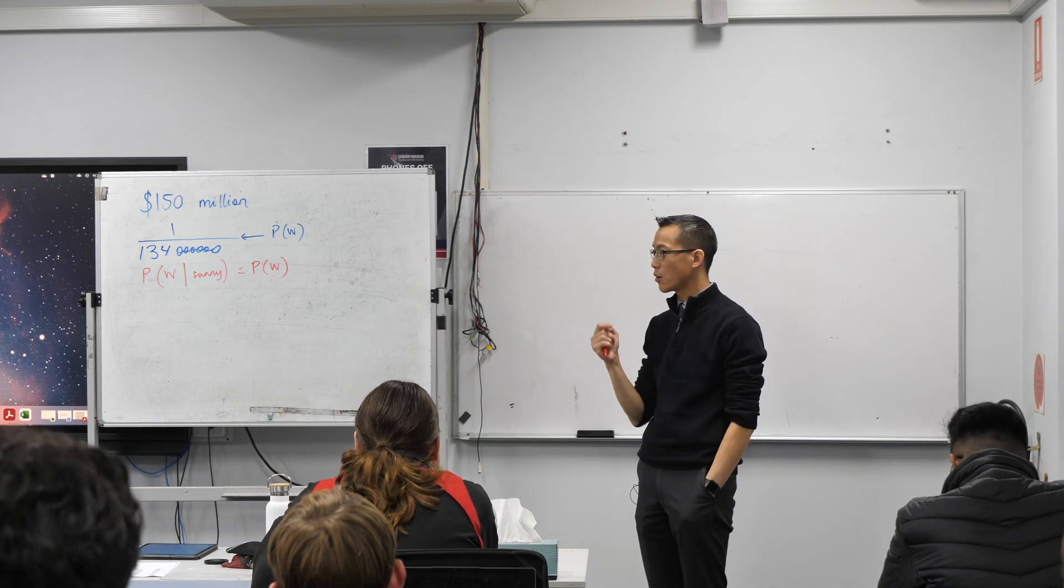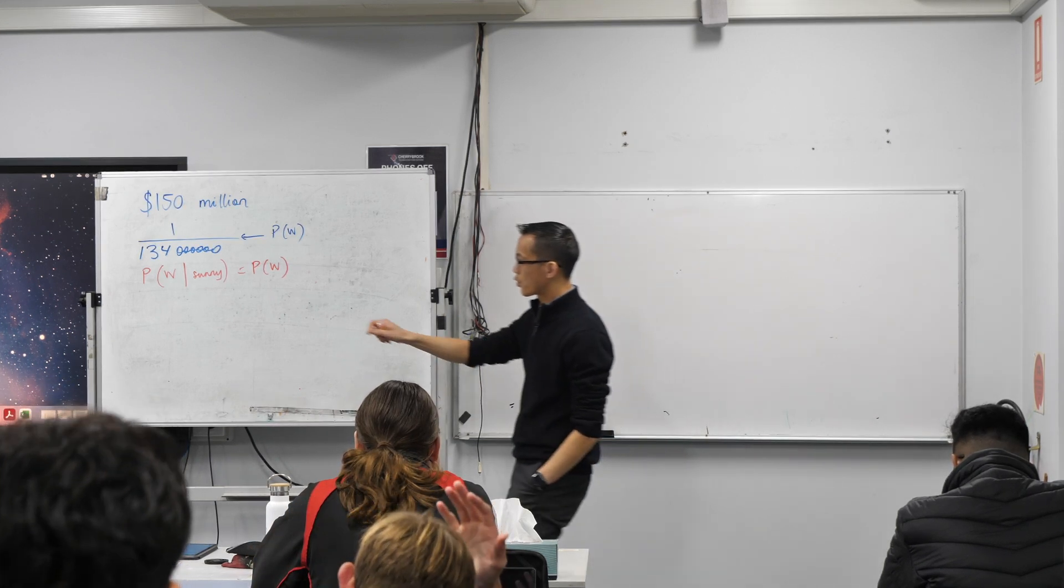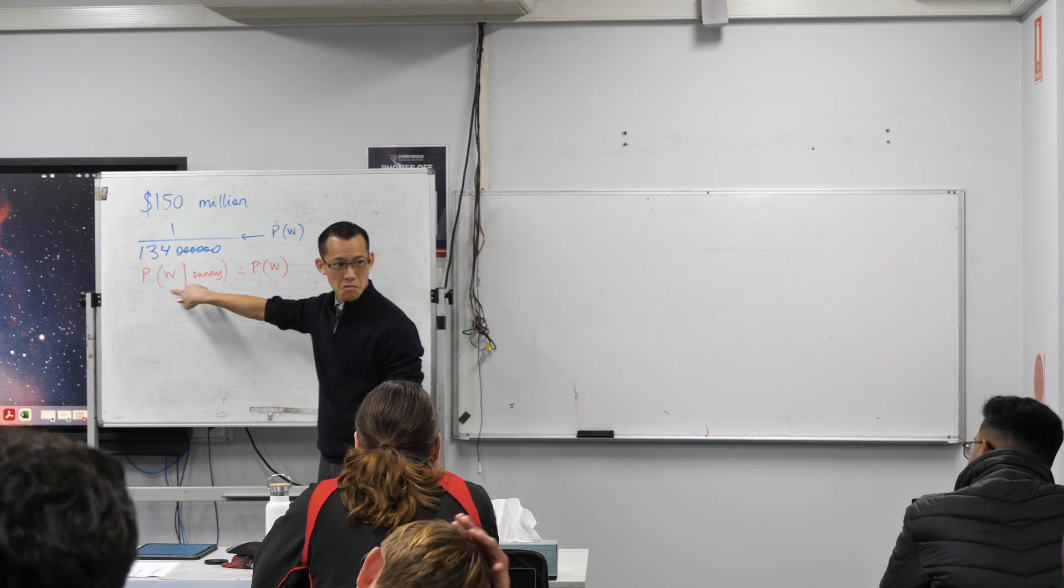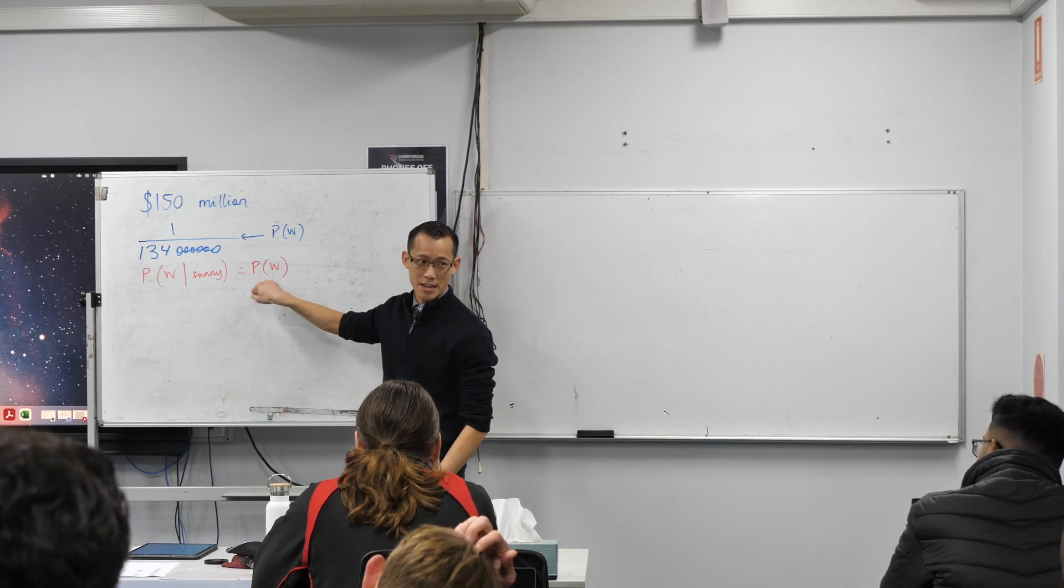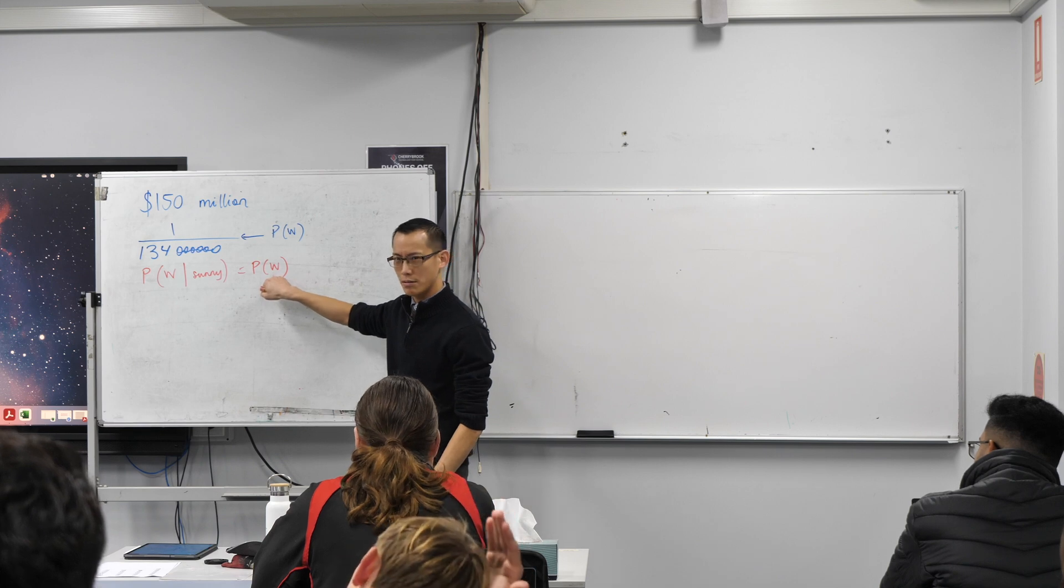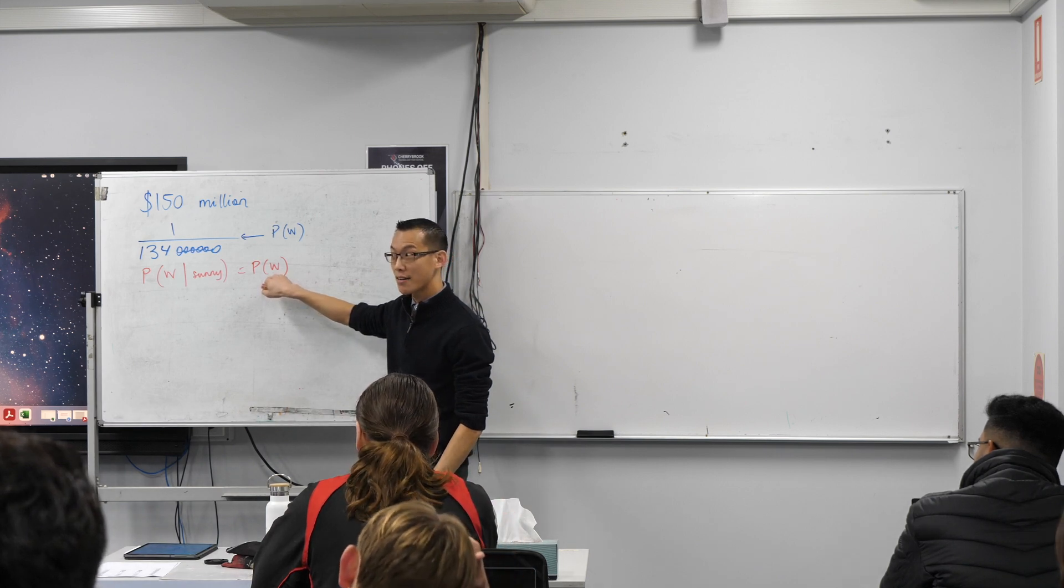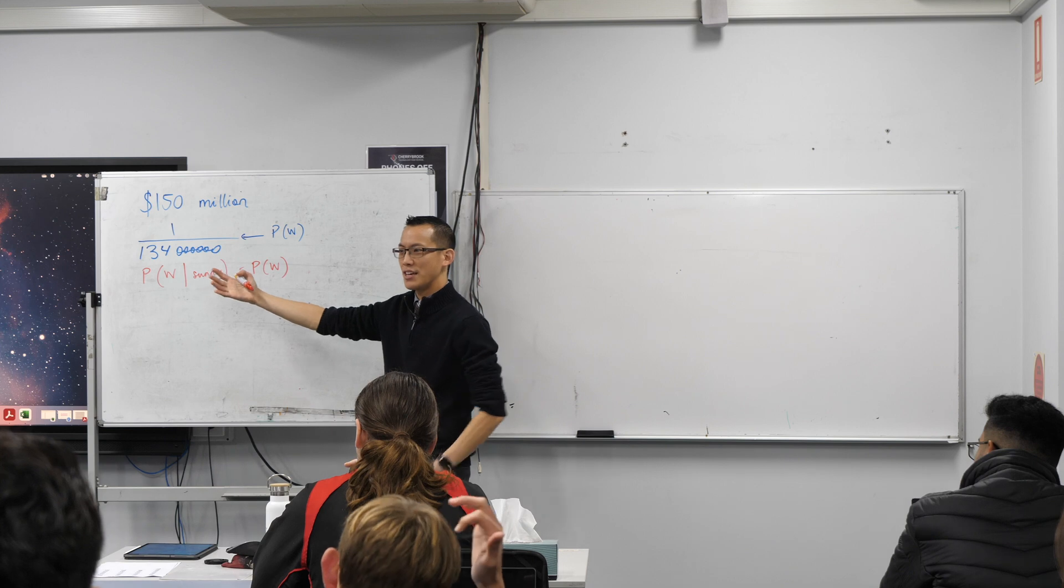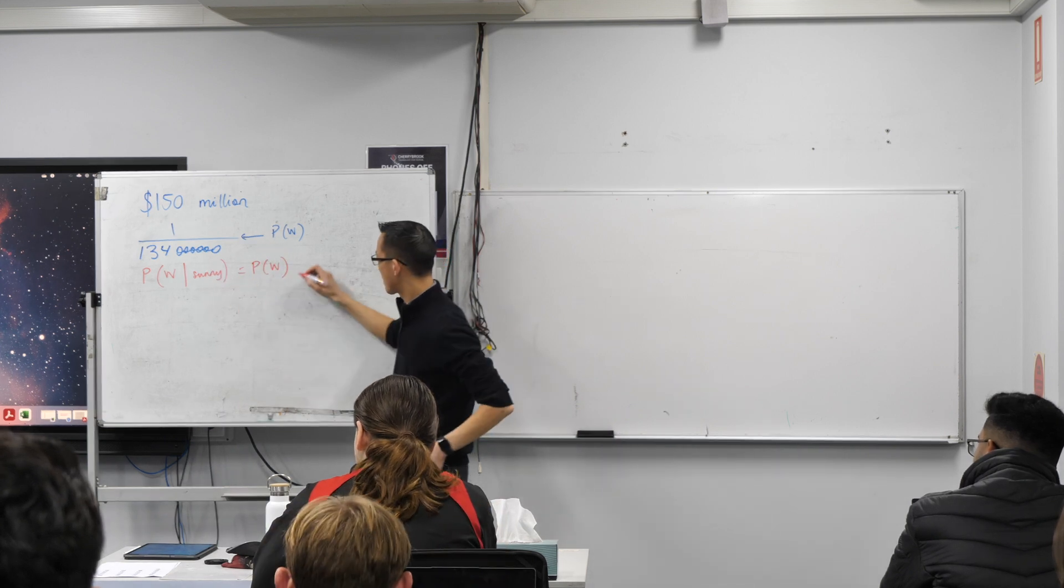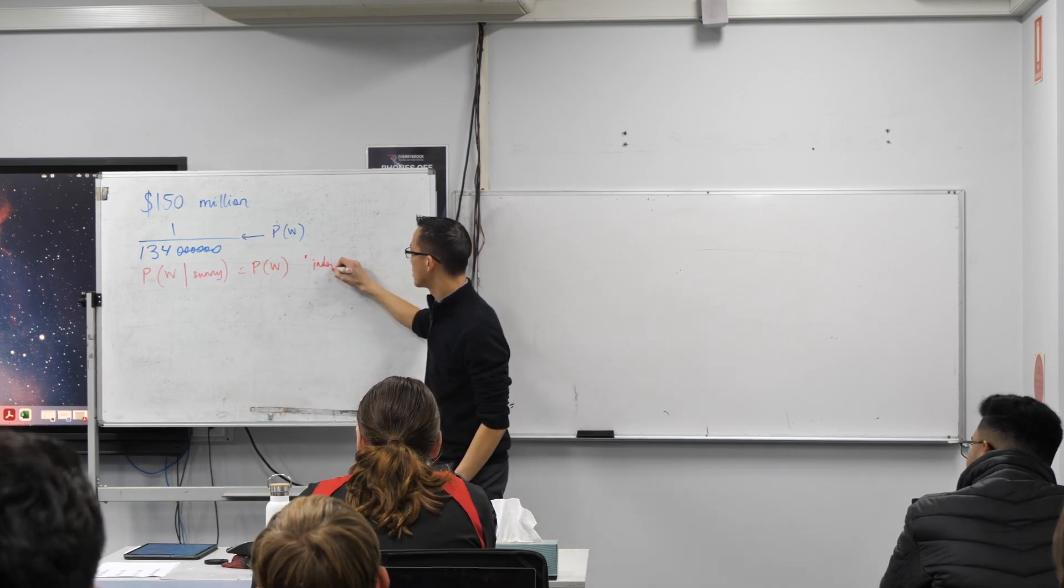Now, we have language for this. In probability, we can talk about two different events that really have no impact on one another. What do we call these? It starts with an I. You can all say it together, can't you? It's independent, right? These are independent events.